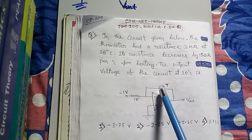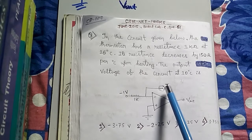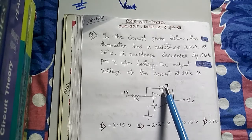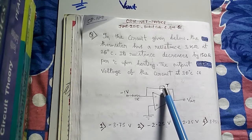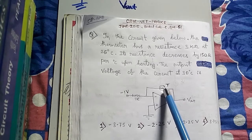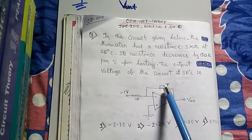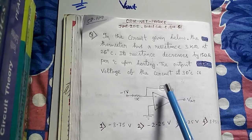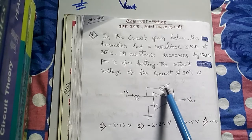In this problem, the feedback resistance RF is actually the resistance of the thermistor. What happens with the resistance of a thermistor is that it is temperature sensitive — when you increase the temperature, the resistance decreases, and when you decrease the temperature, the resistance increases. This is the reverse process with temperature.